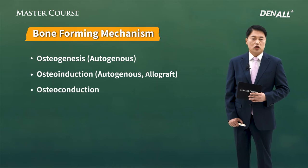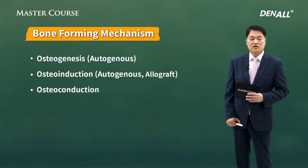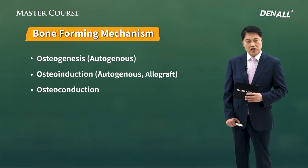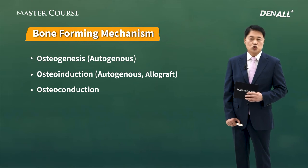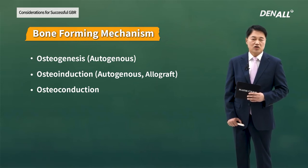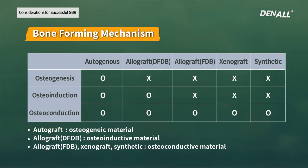There's also osteoconduction — you maintain space and help formation of bone. Except for autogenous bone and allograft, everything else helps in osteoconduction. Autogenous bone helps in osteogenesis, osteoinduction, and osteoconduction. In some allograft like DFDBA, osteoinduction is possible, and the rest contributes in osteoconduction. The rest of allograft, xenograft, and synthetic bones contribute in bone formation through osteoconduction — they create and maintain space to encourage bone formation.